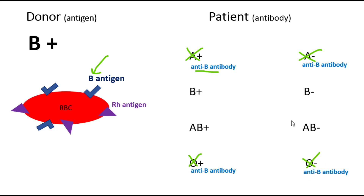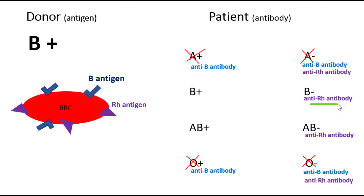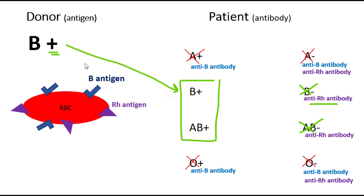Then out of the remaining four groups, which ones do not accept receiving Rh antigen? Individuals who have negative blood type can build antibodies against Rh. So I eliminate the negative blood types, simply because a negative blood type patient does not accept a positive blood type. What is left would be the only patients that accept B positive blood — obviously B positive itself, and also AB positive.